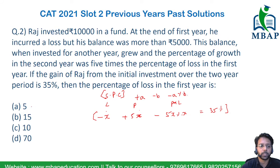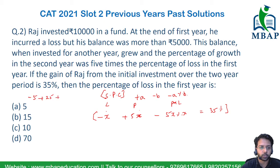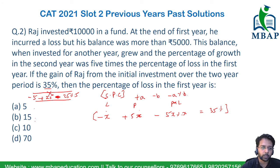Now we look at the options to see which can work. For example, if x = 5, it becomes minus 5 in the first year, plus 25 in the second year, and then minus 25% of 5. That expression does not come up to 35%, so 5 is not the answer. Checking option C, which is x = 10: it becomes minus 10, plus 5 times 10 which is plus 50, minus 50% of 10.